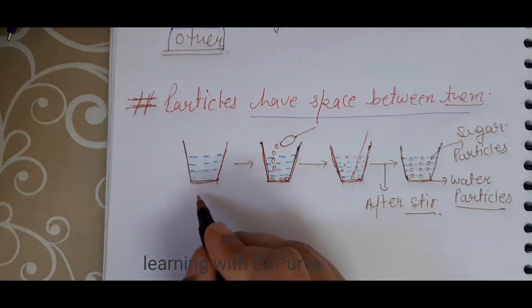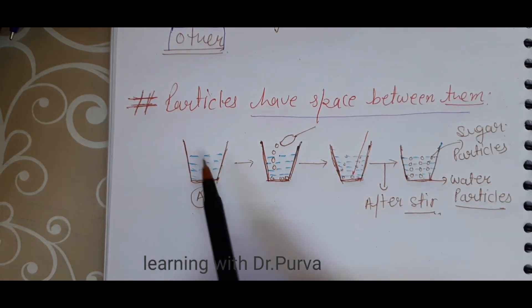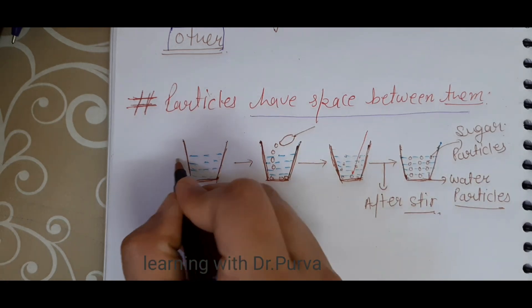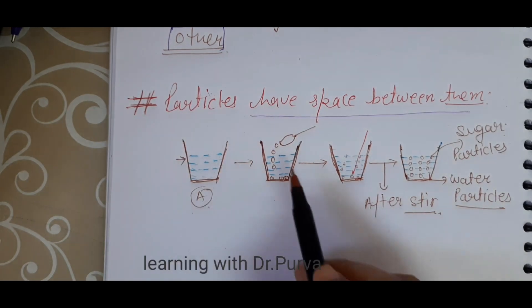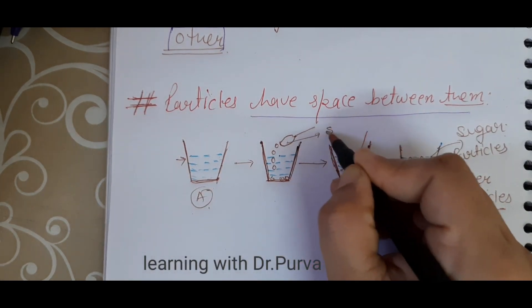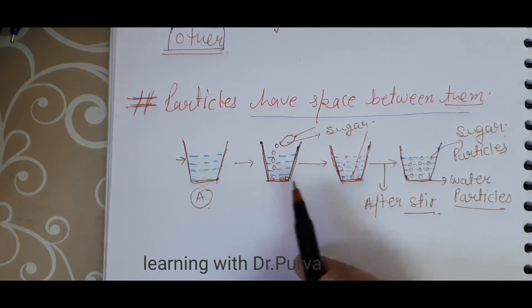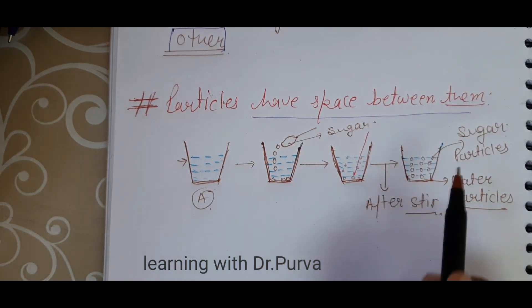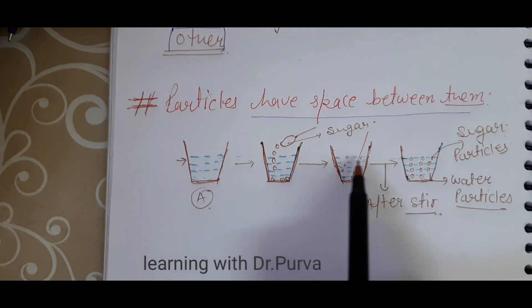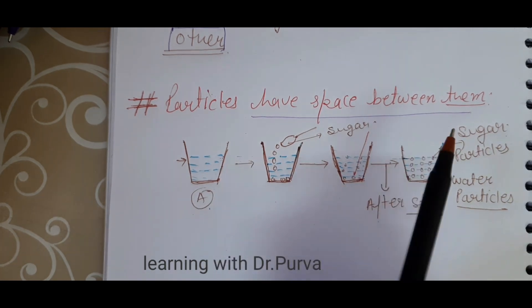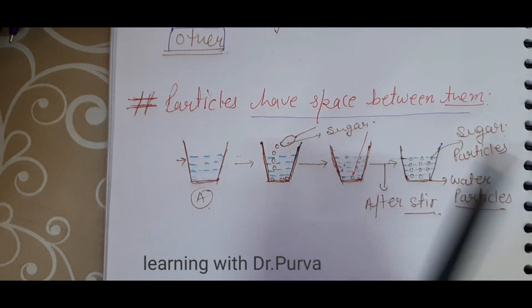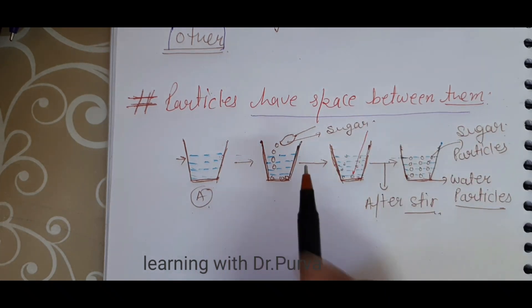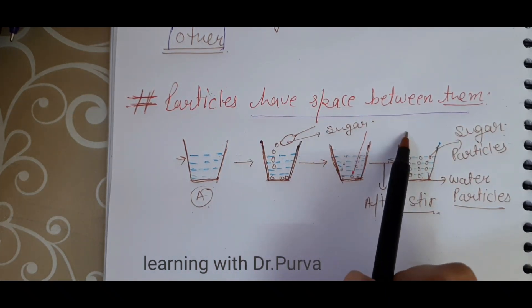First of all, I have container A and I have added water. This water is present up to this level. After adding sugar, I will stir it. Then we check the water level. The previous level of water has not increased.